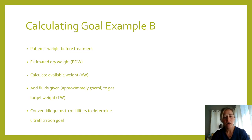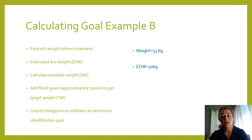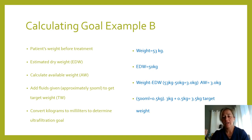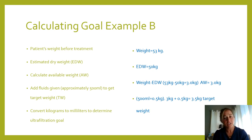Example B: the patient's weight is 53 kilograms, and the estimated dry weight according to the doctor is 50 kilograms. The difference is three kilograms — that is your available weight. Add in the additional fluid given during treatment, 500 milliliters or 0.5 kilograms. That gives you a target of 3.5 kilograms. Convert it into milliliters — add two zeros — and you've got 3,500 milliliters.